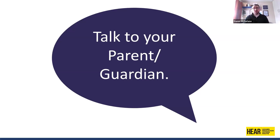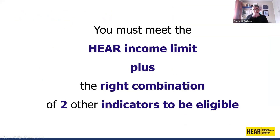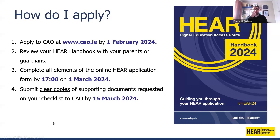I really stress that you go home and chat to whoever is the responsible adult in your life — whether that's a parent, guardian, grandparent, auntie, or uncle. You need to make sure that everyone understands what's being asked. You also need to meet the income limit and the right combination of two other indicators. Instead of getting into highly complicated details, please refer to your HEAR booklet or the accesscollege website, but the income limit and the year 2022 are the most important starting points.